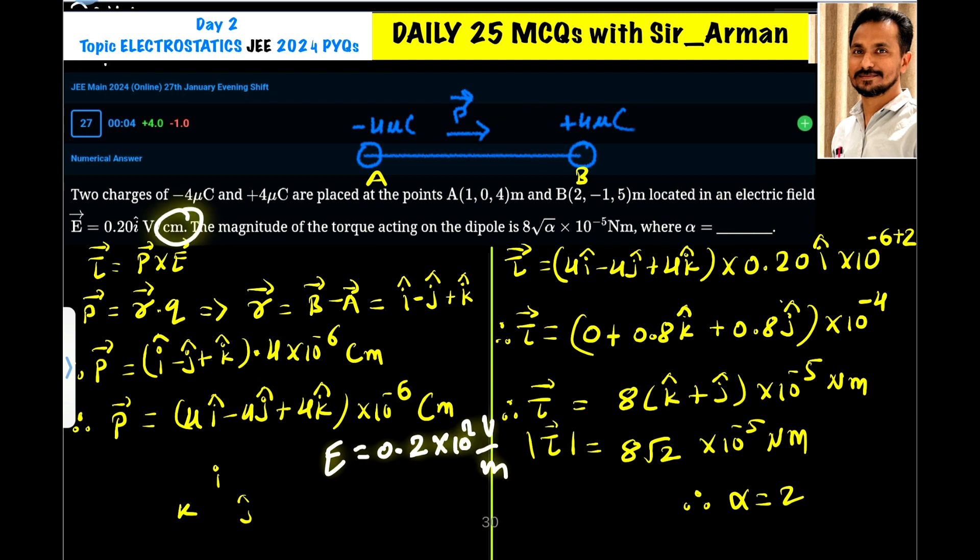I have converted centimeter to meter. So if it was 10 raised to minus 2, it goes up, it becomes plus 2. So here it is minus 6 plus 2, it becomes 10 raised to minus 4. Now I have just taken here 8 as a common. So if you take 8 common, so it is 8 K cap plus J cap, and here it is 0.8, so you can write 8 by 10, so 10 again goes up, it becomes 10 raised to minus 4 minus 1, so it is 10 raised to minus 5.